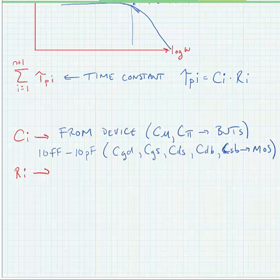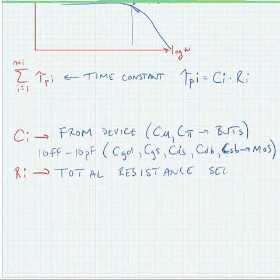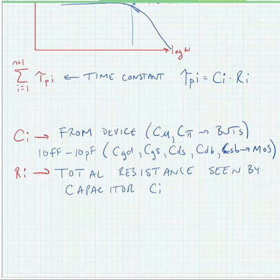Now, the resistances - what Ri is, is the total resistance seen by the capacitor. So we're going to identify an individual capacitor, and then we're going to look at the total resistance that that capacitor sees in terms of the impedance connected to it.